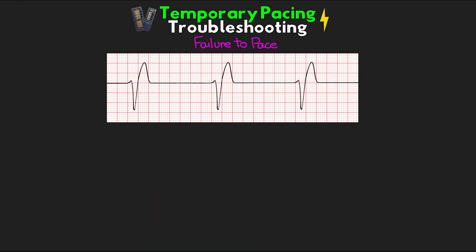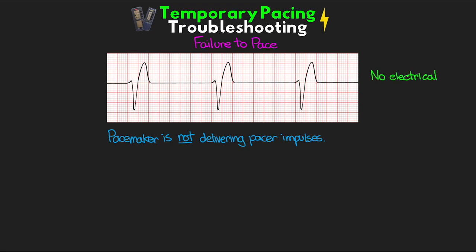The next potential problem is failure to pace. This means the pacemaker is not delivering pacing impulses. Looking at the rhythm strip, no electrical spike is seen, and thus no contractions are taking place except for those due to the patient's own intrinsic rhythm. This one is pretty easy to spot, so we need to think of the potential causes in order to fix them.